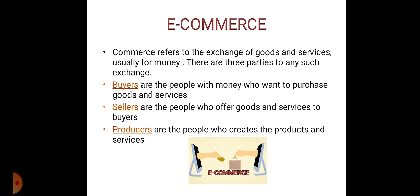Our next topic is e-commerce. Commerce refers to exchange of goods and services, usually for money. There are three parties to any such exchange: buyers, sellers and producers. Buyers are the people with money who want to purchase goods and services. Sellers are the people who offer goods and services to buyers. There are two types of sellers: retailers and wholesalers. Producers are the people who create the products and services. E-commerce is simply an extension of this concept. Electronic commerce or e-commerce means transactions conducted electronically or through the internet. It is a way of enabling or doing business over the internet.